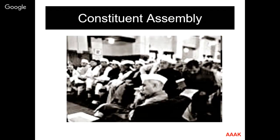The constitution was framed by an august body consisting of prominent people of India at the time of independence. This body was the constituent assembly, formed with the objective of framing the constitution. Congress was the only party of significance at that time, so the majority of members were from Congress. But special care was taken to include people holding all shades of opinion — right, left, center — giving proper representation to all sections of society. The constituent assembly was truly representative of the people of India.